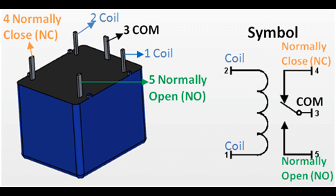Sequential Control: In some applications, time delay relays are used for sequential control, where different components or processes are activated in a specific order with predefined time gaps between them. In summary, time delay relays provide a means to introduce controlled delays in the operation of electrical circuits, allowing for precise timing in a variety of applications.